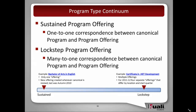So there's a one-to-many correspondence between the canonical program and the program offering. You may do this to separate cohorts that are enrolling at the same time. An example used here is a certificate in .NET development. There will be multiple offerings of it, and for a particular period — say 2011–12 — there will be four separate offerings that differ by location and start quarters. You could establish separate offerings for each one of those, though you need not. You can do anything in between as well, so it is a continuum.